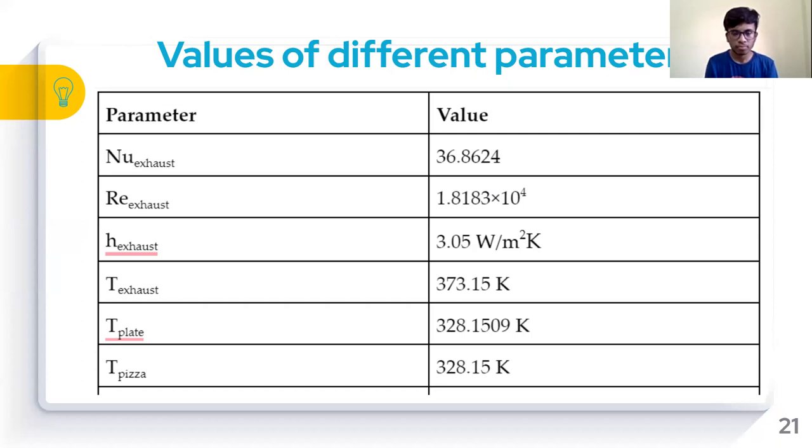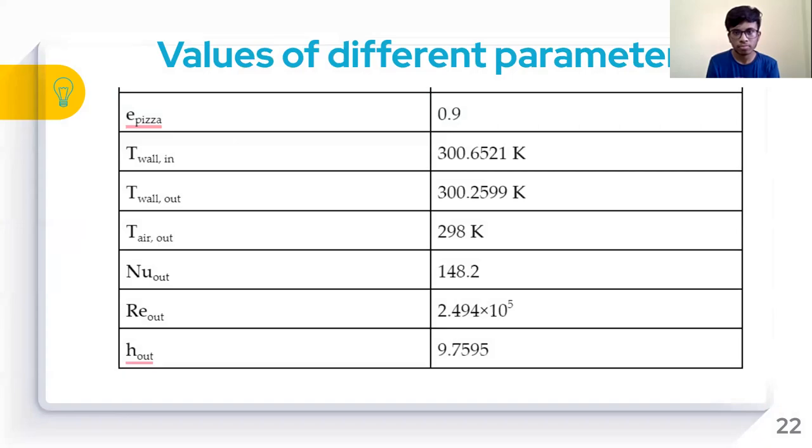In the last row, we observed that the T_pizza comes out to be 328.15 Kelvin, which is approximately 55°C. Other parameters are also mentioned to cross-check the validation of the model. Moreover, we took emissivity of pizza equals 0.9 and temperature of the wall inside came out to be 300.65 Kelvin.